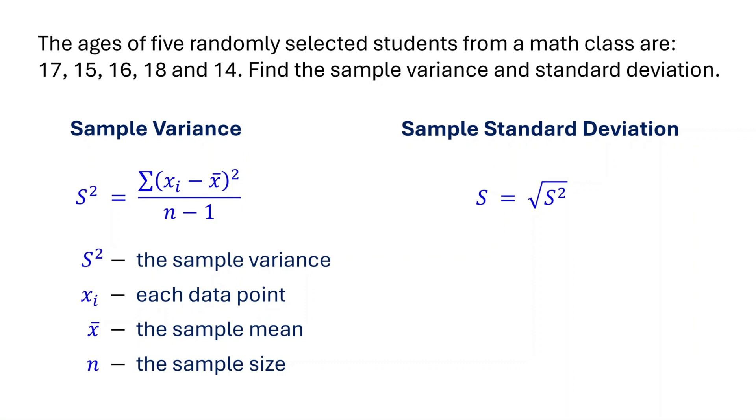The standard deviation of a sample is simply the square root of the sample variance. Here, s represents the sample standard deviation. So to find the standard deviation, first calculate the variance and then take its square root.